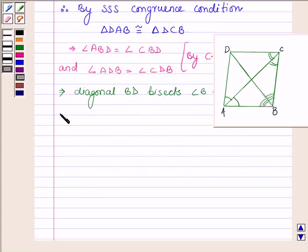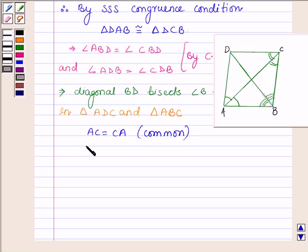Now let us consider the triangles ADC and triangle ABC. Now in these two triangles, side AC is equal to CA. This is common to both the triangles. Side AD is equal to AB. This is given since it is a rhombus, all the four sides are equal. And DC is equal to BC.